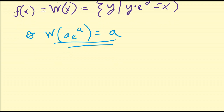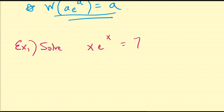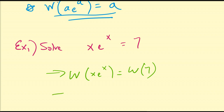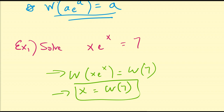So if we take that as the definition, we can immediately solve some equations. Example one: suppose we want to solve x·eˣ = 7. If I directly apply the Lambert W function to both sides, I get W(x·eˣ) = W(7). By the special property of W, W(x·eˣ) is just equal to x. So x = W(7). Just as with square roots and logarithms, there are numerical methods to calculate W(7), but this is the exact algebraic solution.